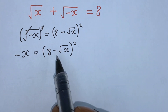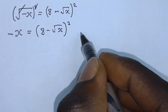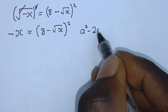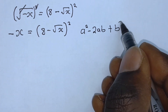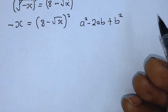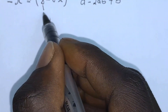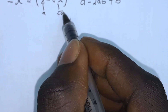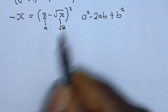The next step here is to expand this bracket. Remember this is in the form of a squared minus 2ab plus b squared, where our 8 here is a and b here is square root of x. So let's expand it.